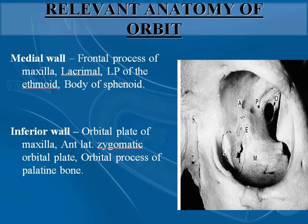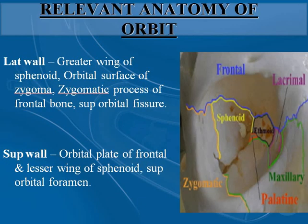The medial wall of the orbit consists of the frontal process of the maxilla, the lacrimal bone, the lamina papyracea of the ethmoid, and the body of the sphenoid. The inferior wall consists of the orbital plate of the maxilla. Anterolaterally there is the zygomatic orbital plate and the orbital process of the palatine bone. The lateral wall includes the greater wing of sphenoid, the orbital surface of the zygoma, the zygomatic process of the frontal bone, and the superior orbital fissure.